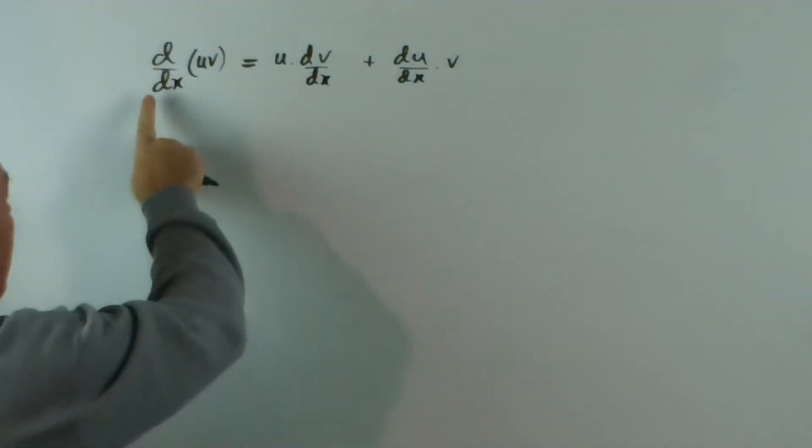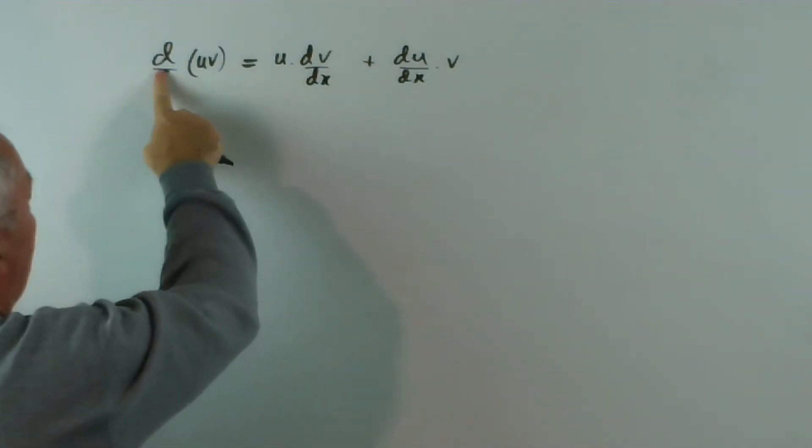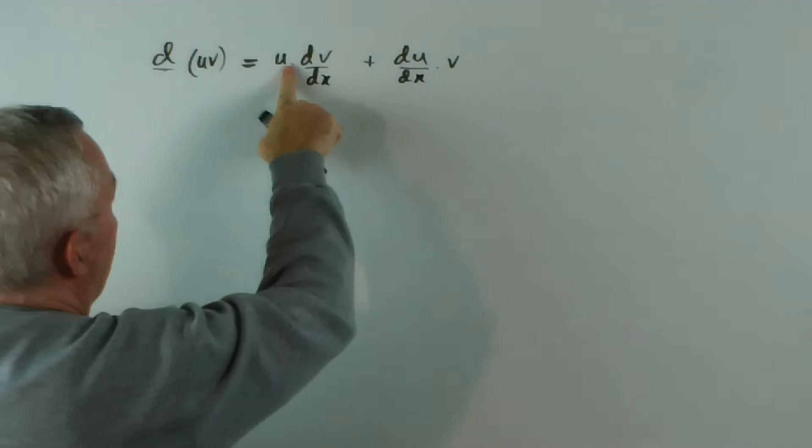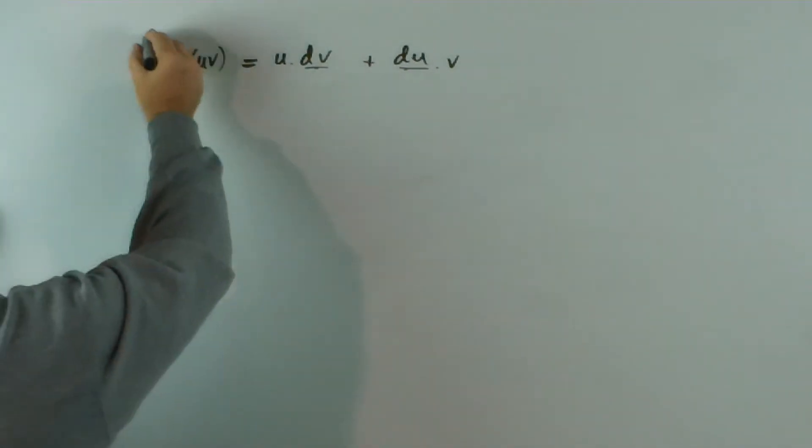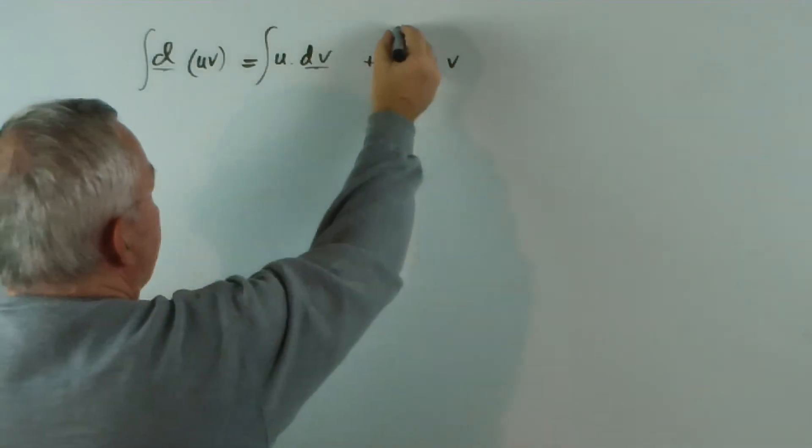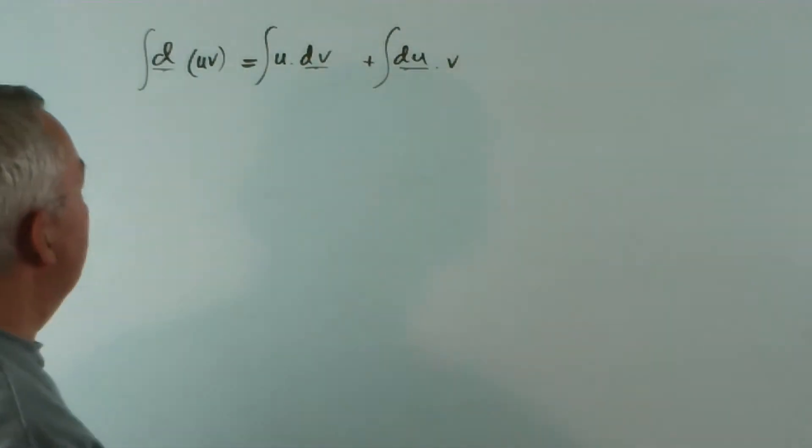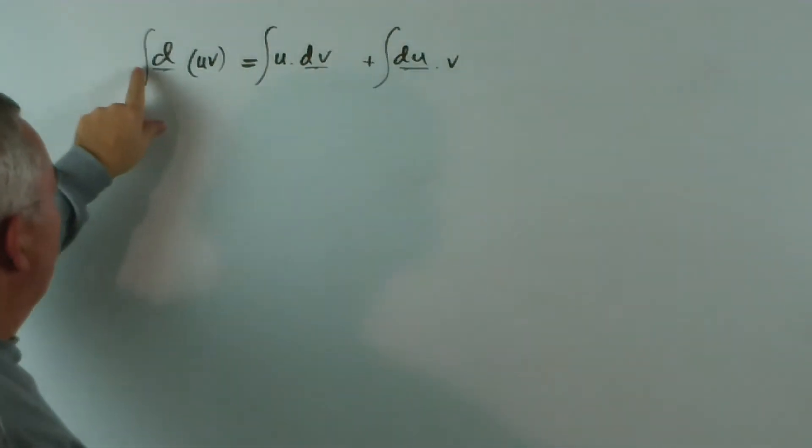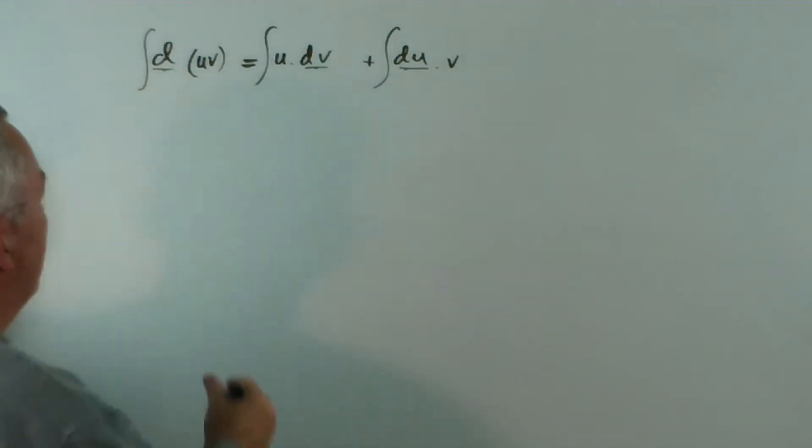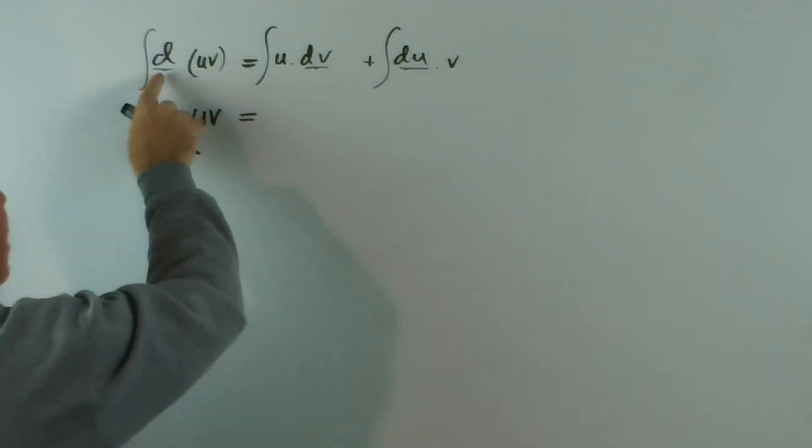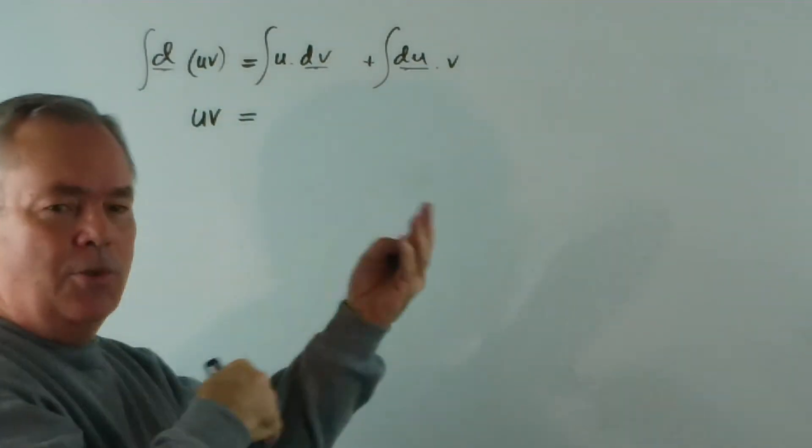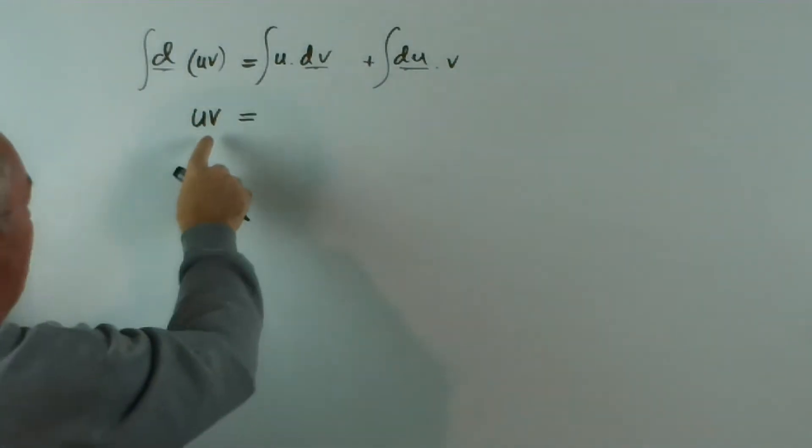If we want to integrate, we can remove these and put it in the integral form and integrate. It's nice and simple. Now, the integral of the derivative of uv is just uv because the integral is the inverse function of the derivative - they undo each other. So, we're back to what we started with.